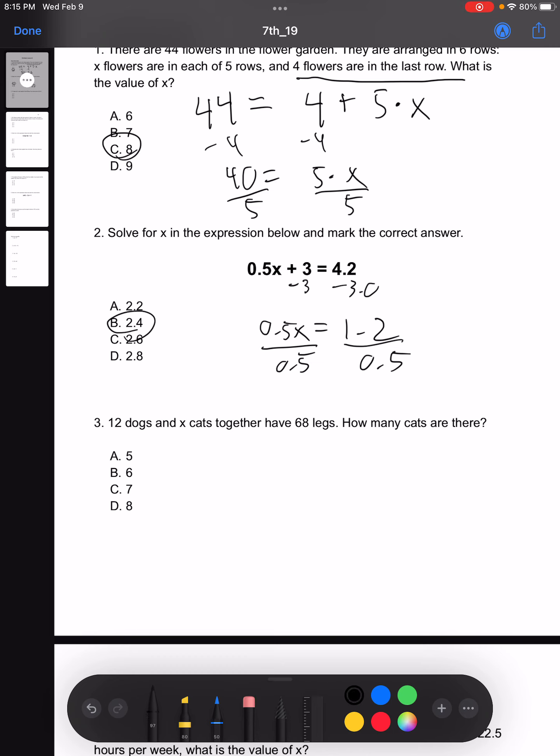Let's look at number three. 12 dogs and X cats together have 68 legs. How many cats are there? Well, we know that every single dog and cat has four individual legs. So if we know that there are 12 dogs and we know that every dog has four legs, we can do 12 times 4 to get that all 12 dogs have in total 48 legs. We have X cats all with four legs. So we could convert that into an X and a 4. And that equals a total of 68 legs.